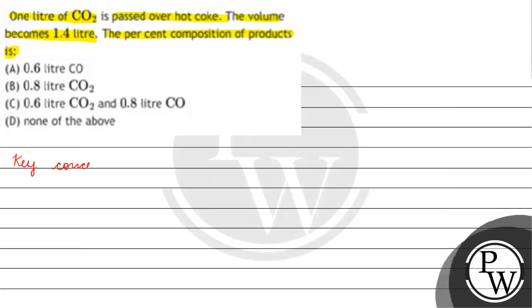The key concept for this question is reaction of CO2 with coke. What is the reaction of CO2 with coke? It is CO2 plus carbon gives us basically 2 CO. This will be in gaseous state, this in solid state, and this also in gaseous state.